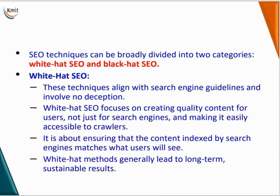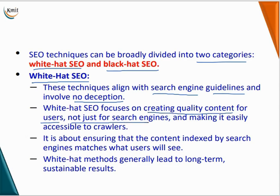SEO techniques can be broadly divided into two categories: white hat SEO and black hat SEO. White hat SEO aligns with search engine guidelines and involves no deception. It focuses on creating quality content for users, not just for search engines, making it easily accessible to crawlers, and ensuring the content indexed by search engines matches what users will see. White hat methods generally lead to long-term, sustainable results.